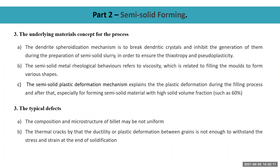As to the underlying material concepts for the process, there are three main mechanisms: the dendrite spheroidization mechanisms, the semi-solid metallurgical behaviors, and the semi-solid plastic deformation mechanisms. As to the typical defects, there are two problems. Firstly, the composition and the microstructure of billets may not be uniform. On the other hand, semi-solid cracking occurs when the ductility or plastic deformation between grains is not enough to withstand the stress at the end of solidification.